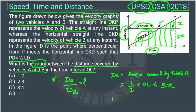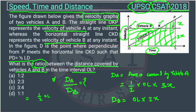Similarly, for vehicle B, the distance of vehicle B is equal to the area covered by vehicle B. This area is a rectangle. The area of a rectangle equals base OL into height DL or CO, both are equal, which is 2x. So the distance for vehicle B is OL into 2x.